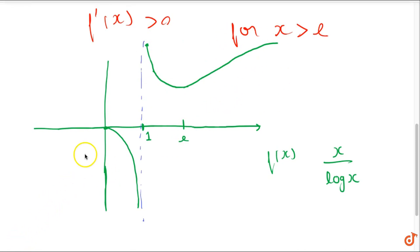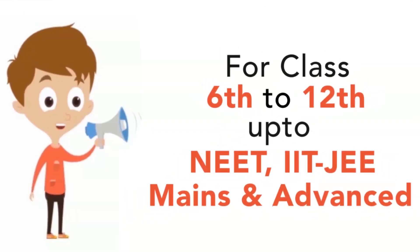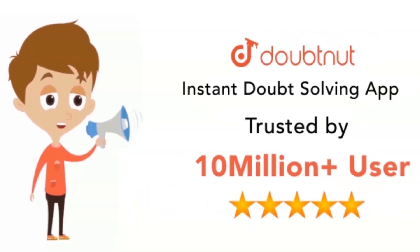Thank you. In the next video, we will see another example of maxima and minima. Classes to 12, NEET IIT, MAINS and advanced level to 10 million students.